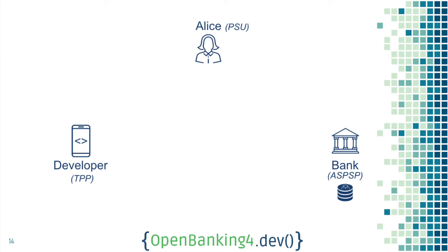First let's introduce the actors. We've got Alice, called the PSU, who owns the data. We've got the bank — we're going to use 4DropMod Bank later on — which has the data stored in the database. And we've got the developer, which is probably you, that wants to consume Alice's data hosted in the bank. Let's see how these three parties can agree to share the data in a secure manner.